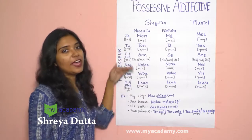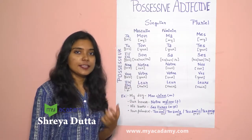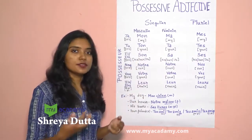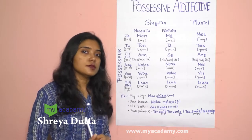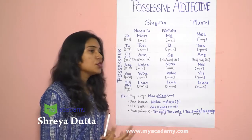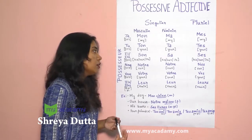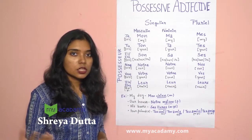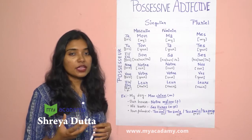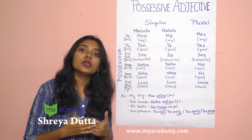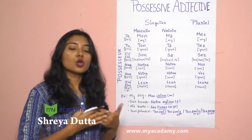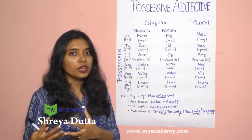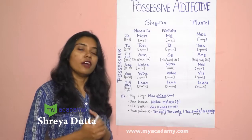Next is il or elle — he or she. For il/elle: son for masculine singular, sa for feminine singular, and ses for masculine and feminine plural. Son can mean his, her, or its. If the noun is masculine, use son. If the noun is feminine, also son applies when needed. And if the noun is plural — be it masculine or feminine — you use ses.